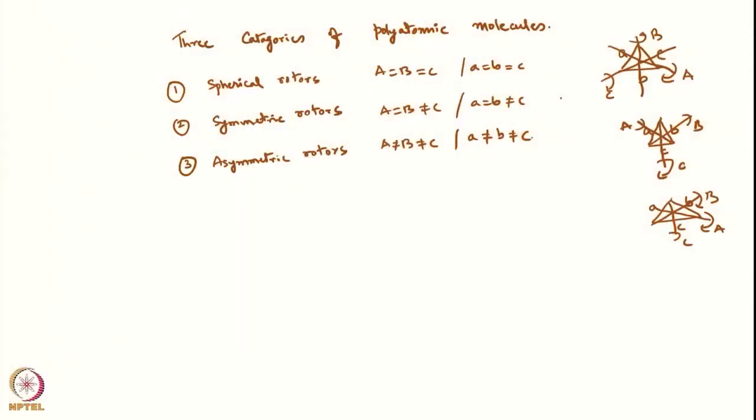Similarly, if you have a spherical rotor, depending on the rotational constants A, B and C, they can be categorized into three types: spherical rotors, symmetric rotors and asymmetric rotors.